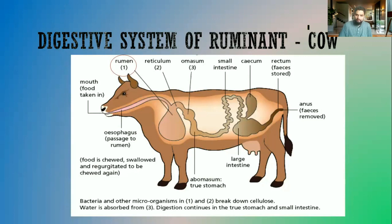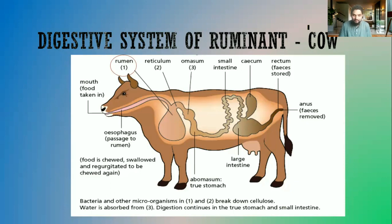The rumen acts as a storage organ and is the largest part of the digestive tract. When the food is ingested, it first goes into the rumen. There are bacteria present in the rumen, and these bacteria will begin the digestion of cellulose. Cellulose forms mainly the cell wall of plant material.